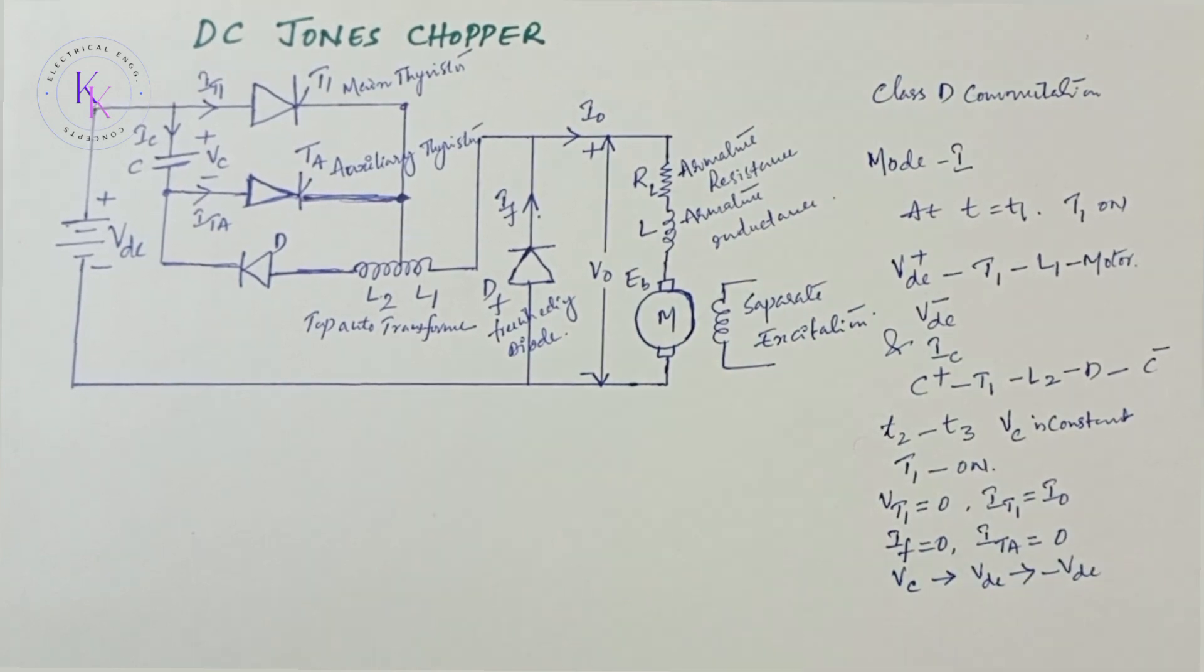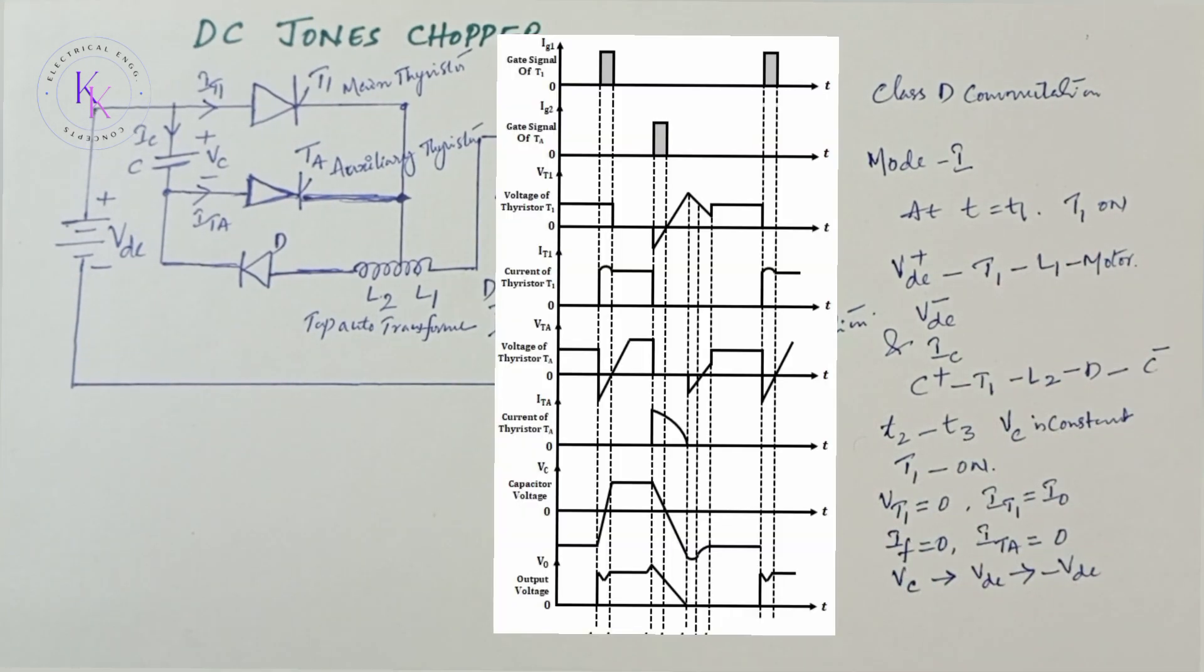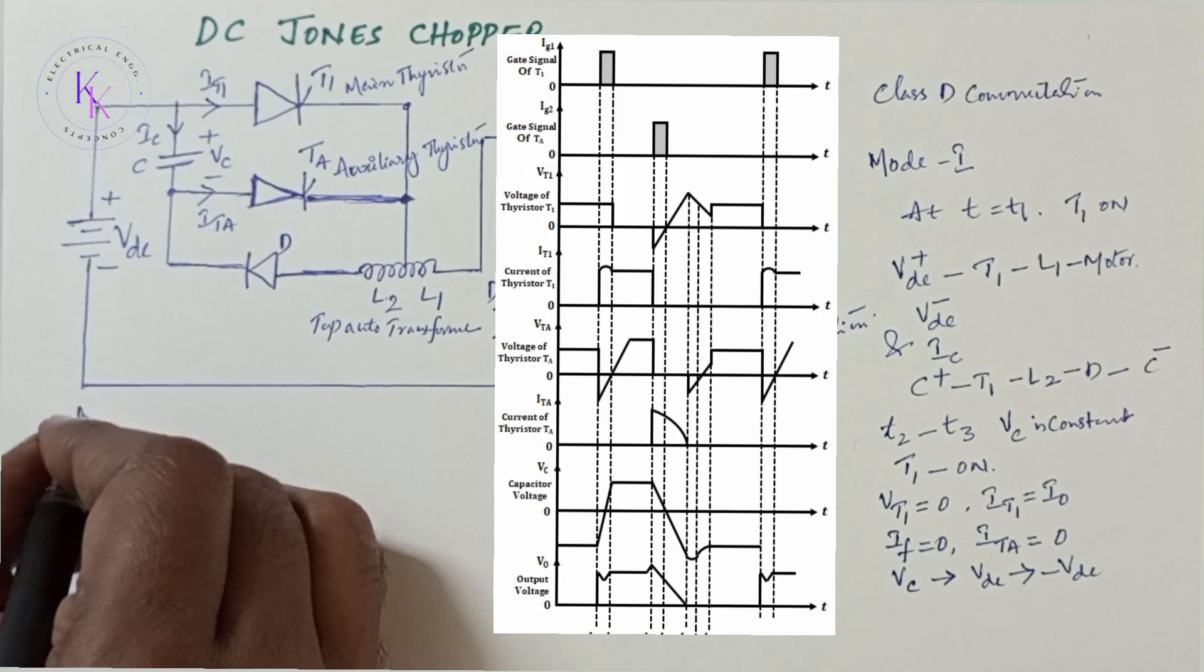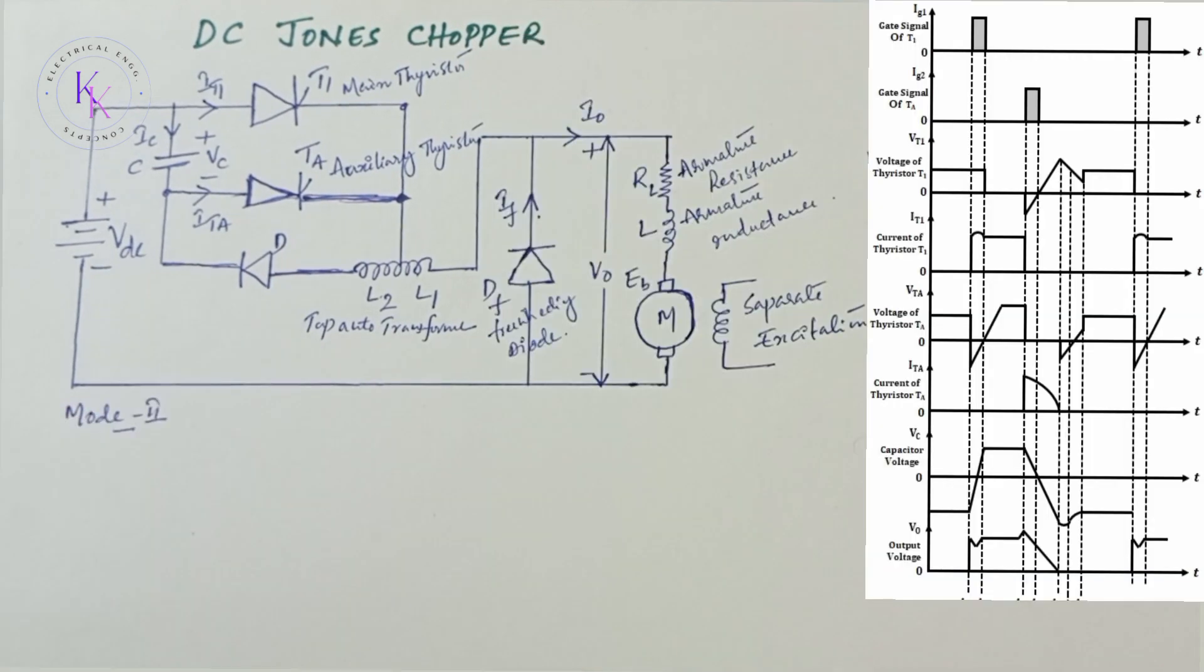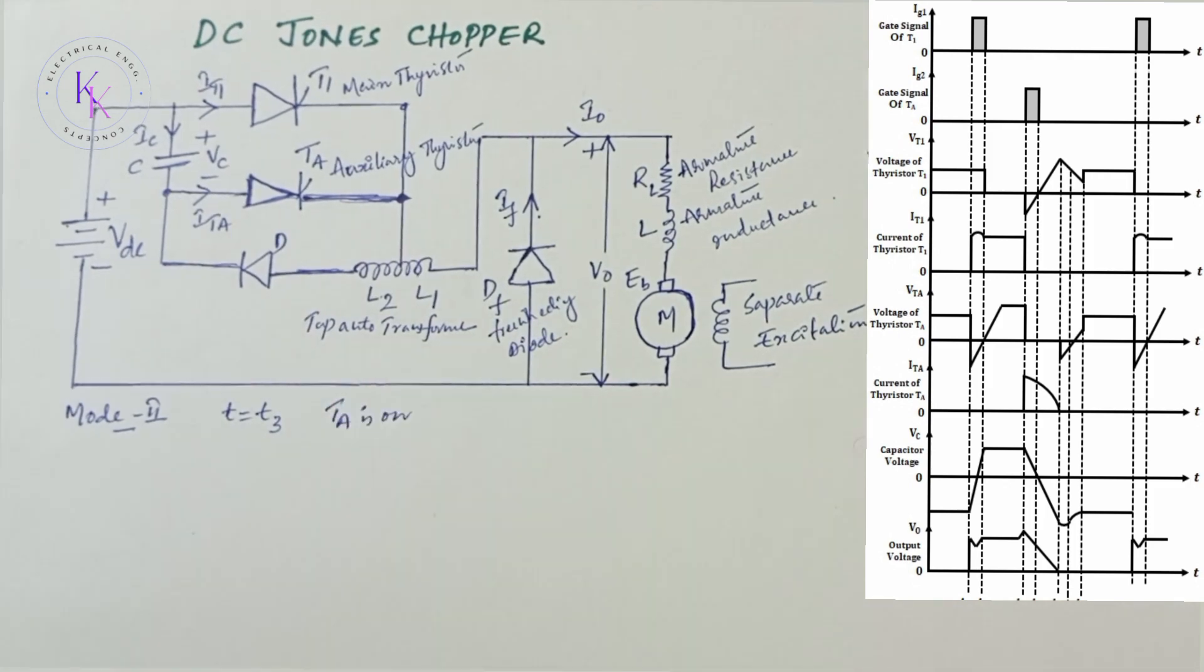You can observe the time periods T1, T2, and T3 in the waveforms. Mode 2: At T equals T3, the auxiliary thyristor TA is turned on by giving the gate signal.